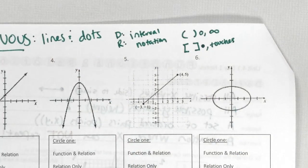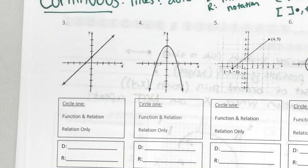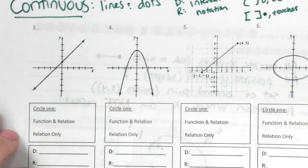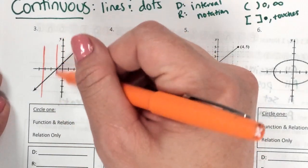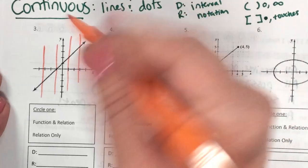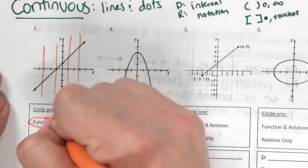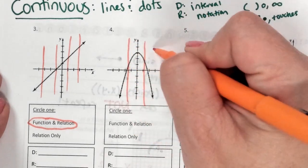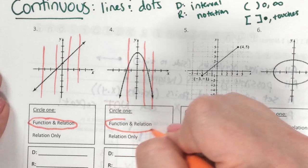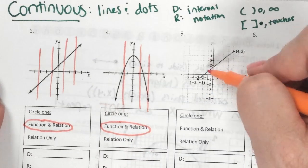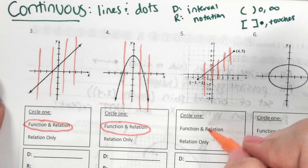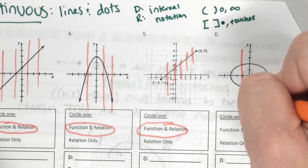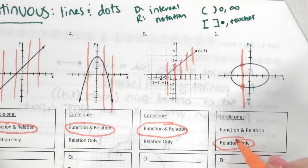Looking at the first graph: if I draw a vertical line, does it ever touch my line more than once? No — so this is a function. Drawing the vertical line on the second graph — no, doesn't touch more than once, so this is a function. Again, vertical line doesn't touch more than once — it's a function. But when I get to the circle, it touches more than once, so it's a relation only.